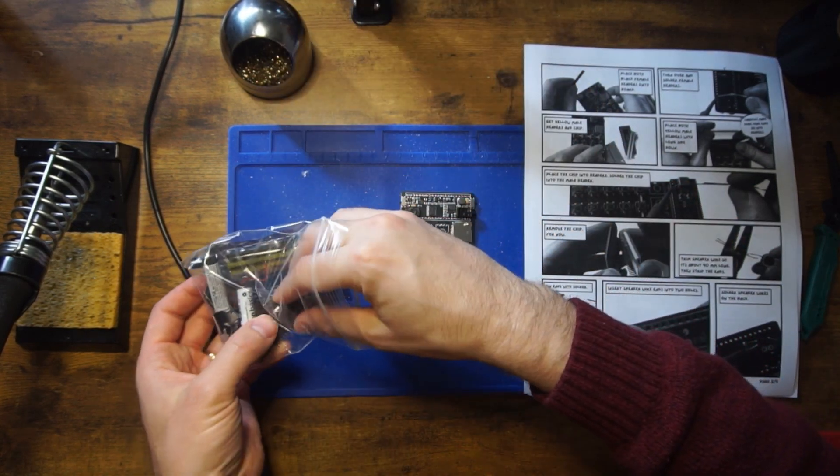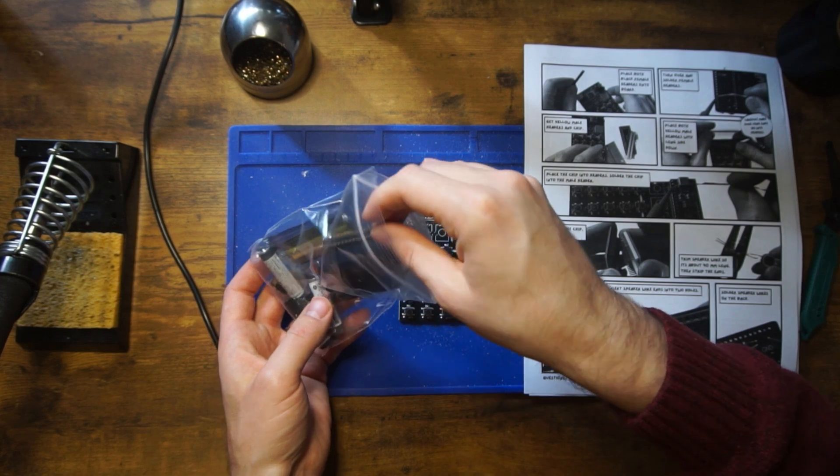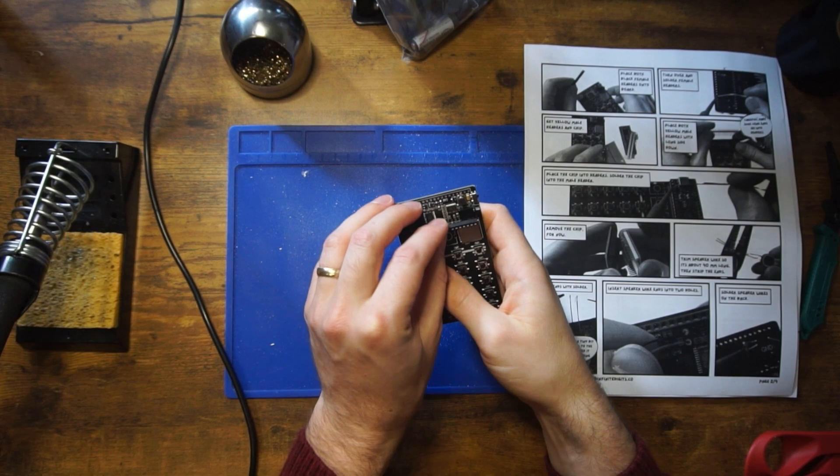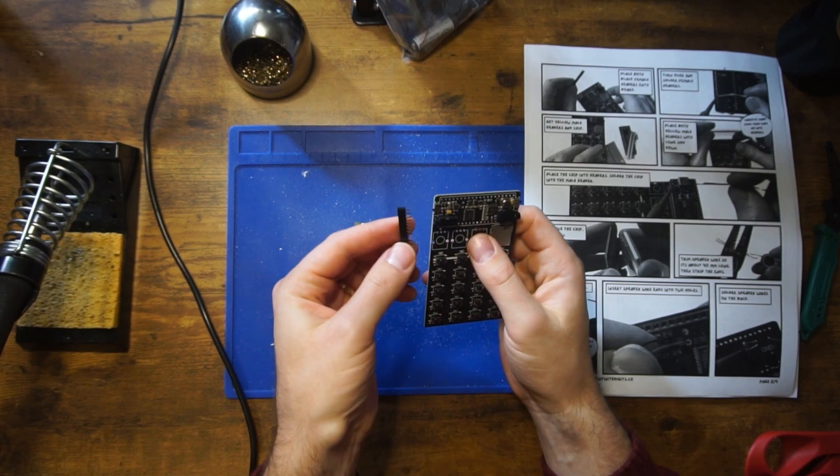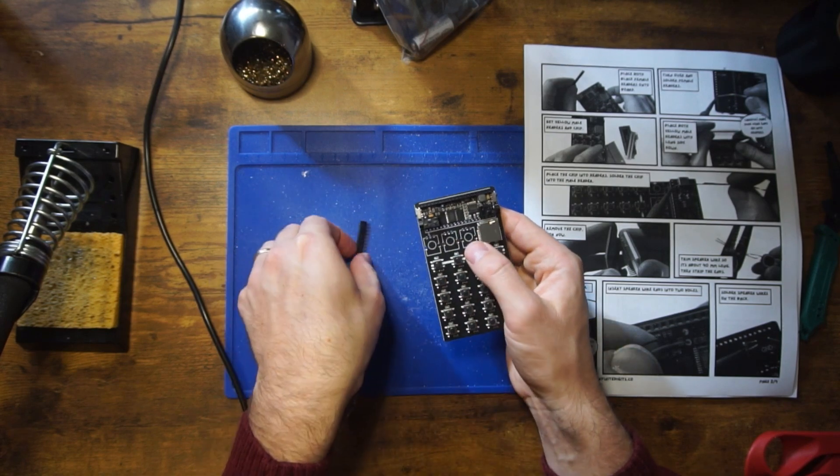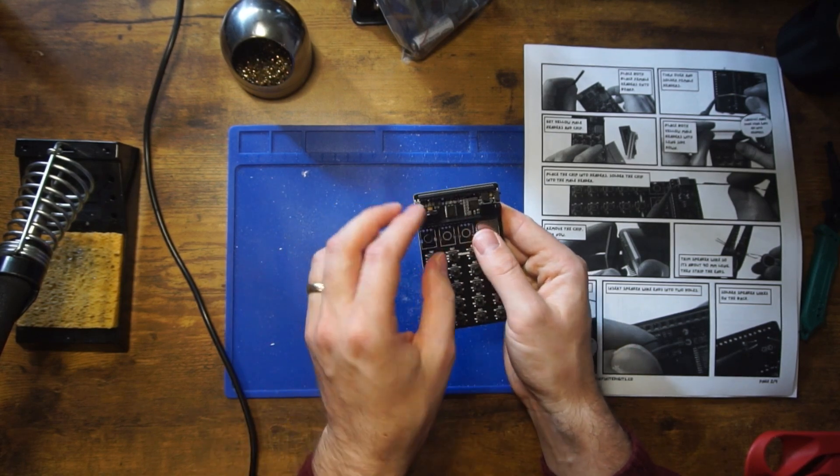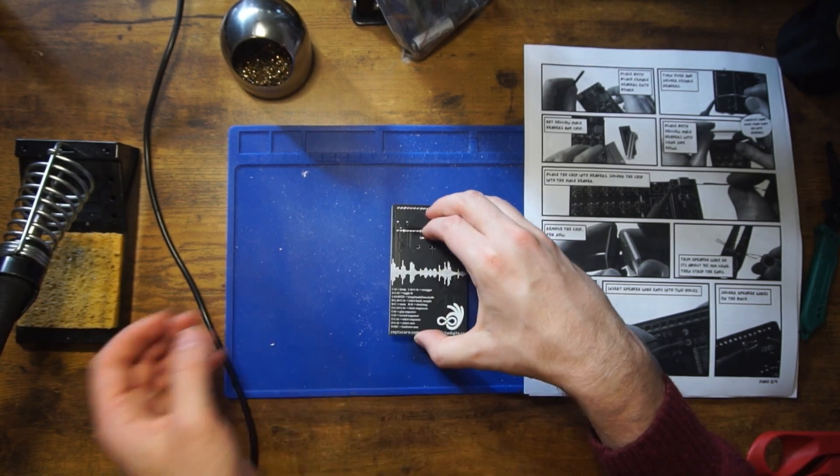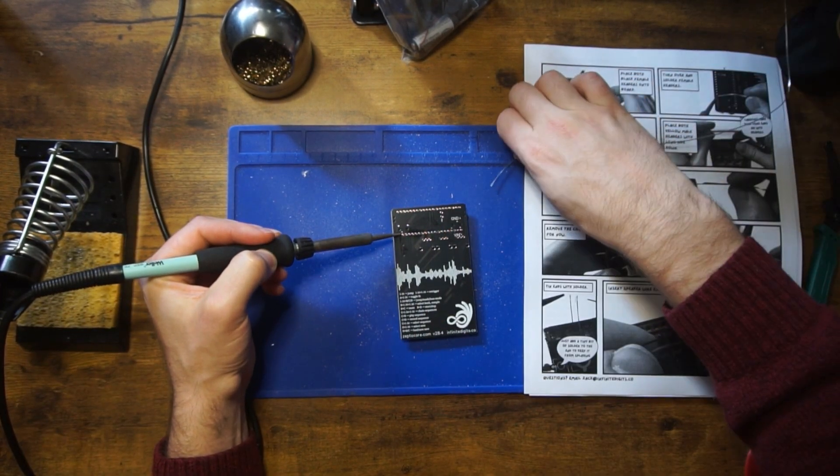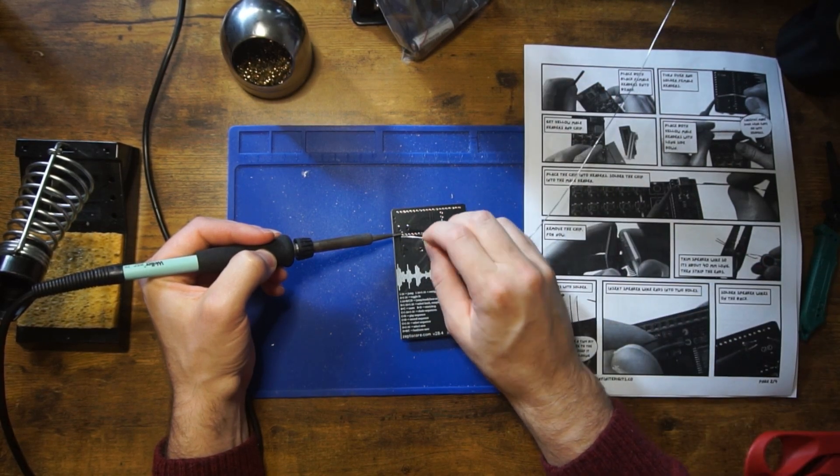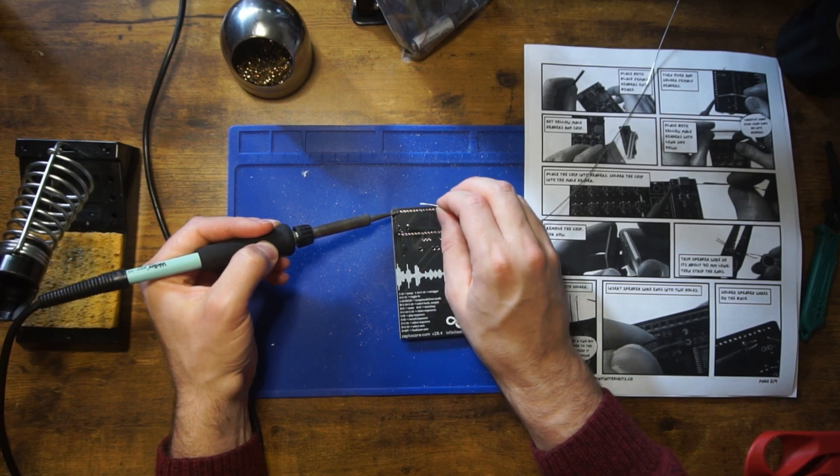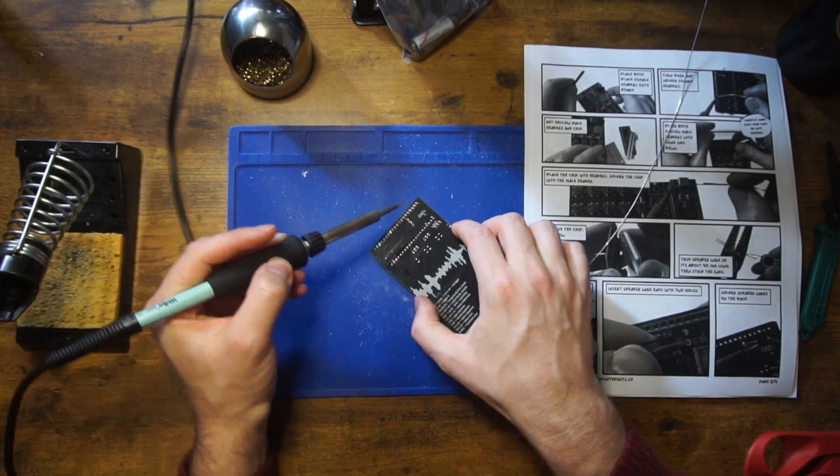Next, you're going to want to get the black female headers from the bag and straighten out any of the legs that may have gotten unstraight in the bag and go ahead and slot those in and then turn it over. Now we're going to solder them in. It's easiest to solder one joint from each first before you solder all 20 of each side. So go ahead and solder one of each, and then you can turn and solder all of them at once.